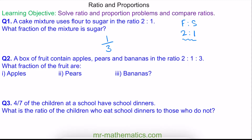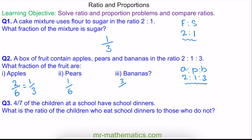In question 2, a box of fruit contains apples to pears to bananas in the ratio 2 to 1 to 3. What fraction are apples? We have 6 shares in total and 2 of them are apples, which simplifies to 1 third. For pears, we have 1 share out of 6. For bananas, we have 3 shares out of 6, which simplifies to 1 half.